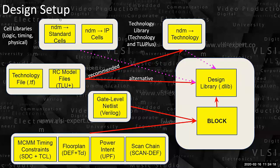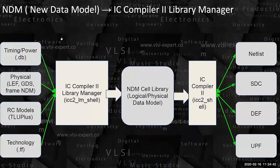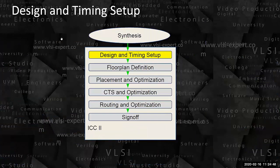Now we saw NDM — new data model libraries. These are essentially for all the technology-related information. So first when we are trying to do the design setup, we will create these. They are either provided by the foundry or you create them. In ICC2, we are looking specifically at design setup. Design setup has two kinds of information: one coming from the foundry, one coming from the designer synthesis side.